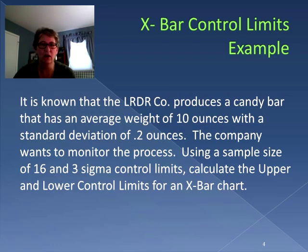Here we have the LRDR company, and it produces a candy bar that has an average weight of 10 ounces with a standard deviation of 0.2. The company wants to monitor the process that makes these bars, so they're going to collect data samples. They're using a sample size of 16 and they want to create control limits of three standard deviations. So we'll calculate both the upper and lower control limits for this X-bar chart.